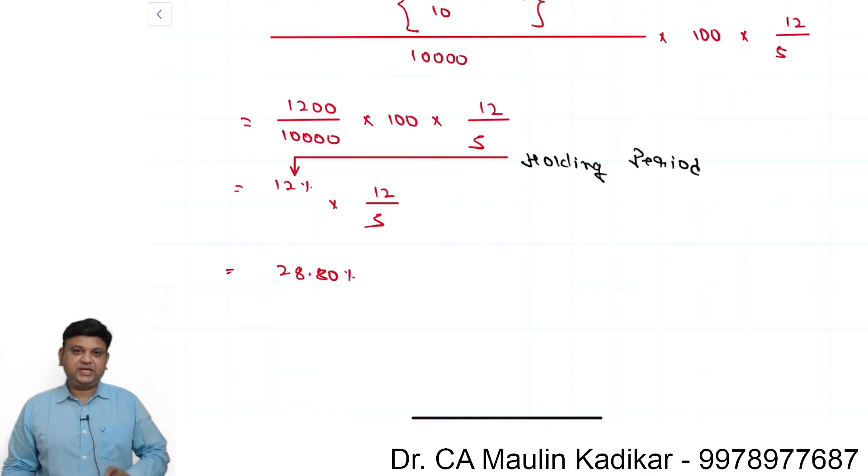The logic is that 12 percent return in 5 months, so return for entire 12 months would be what, the annualized return. 12 percent return in 5 months.